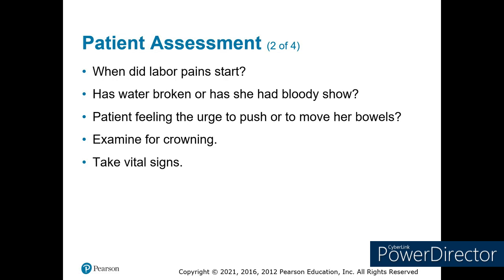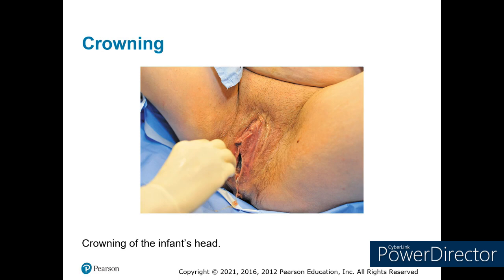At this point, you should be comfortable with mom and she with you. You can say, 'I need to check for crowning to see if the baby is on the way out, or if we have time to get you to the hospital.' Have your partner take vitals. The first thing in the physical exam is to check for crowning — ask mom if you can expose the vaginal opening to see if the head is starting to come out.